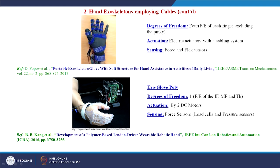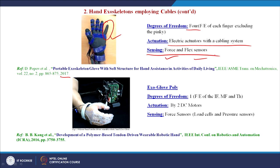In continuation with cable-driven exoskeletons, a portable exoskeleton was recently developed in 2017 by Popov et al. to perform activities of daily living such as grasping and object manipulation. It is a glove-type device with 4 degrees of freedom, excluding the little finger — so 4 digits are considered in the design. Flexion-extension of each digit except the pinky is actuated by electric actuators with a cabling system, and both force and flex sensors are used for sensing.